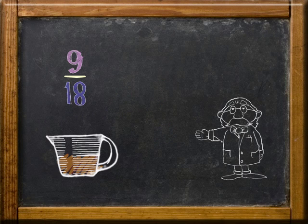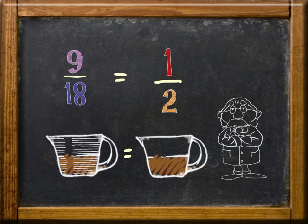And remember, 9/18 cup of brown sugar is the same amount of sugar as 1/2 cup. Thank goodness for simplified fractions.